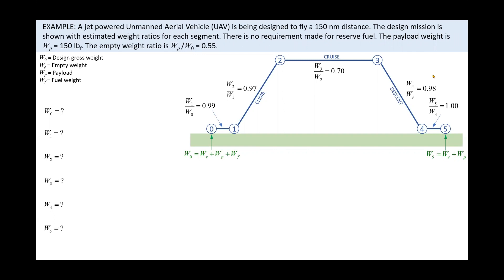However, if we knew it, we could use it to calculate the weight at node 1, as shown. We simply multiply W0 by the weight ratio associated with the segment between nodes 0 and 1. Once we have W sub 1, we can proceed to node 2 and calculate W sub 2 in the same fashion. W sub 2 is the product of the weight at node 1 and the weight ratio along the segment between nodes 1 and 2.